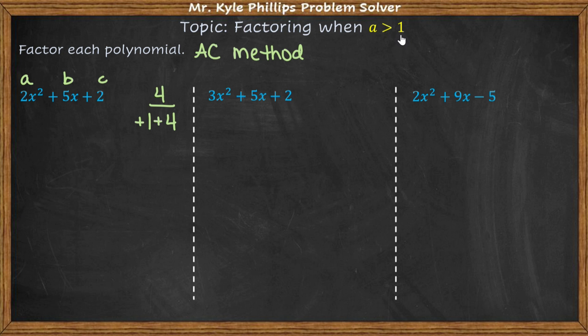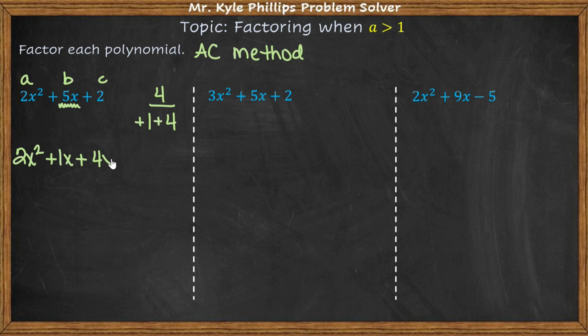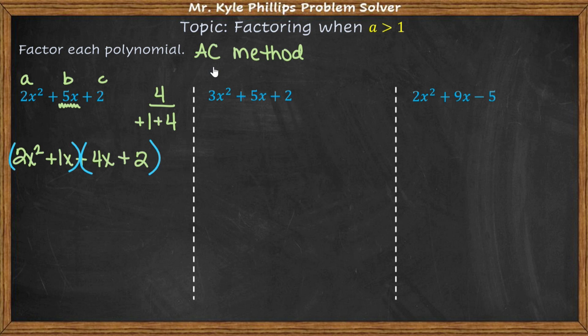This is the part that's different — you only do this when 'a' is greater than one. Instead of writing the numbers in two separate parentheses, we are going to rewrite the b term. You may have heard this called 'bust the b.' So we write 2x² plus 1x plus 4x plus 2. Notice I split the b term apart. This statement is still true because 1x plus 4x equals 5x, so I haven't changed the value. Now I have four terms and can factor by grouping.